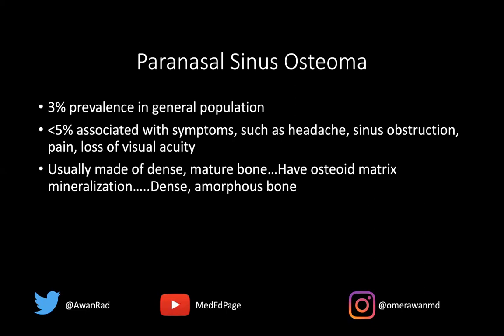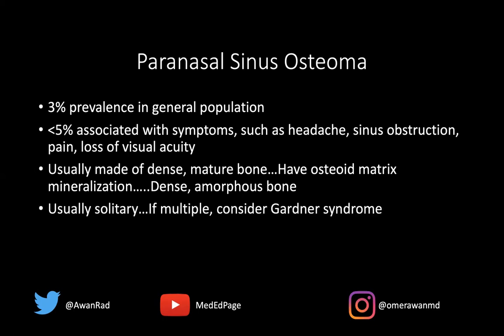This is usually made of dense, mature bone because there's osteoid matrix mineralization. Matrix is the substance that the tumor is forming — in this case, bone. So there's osteoid matrix, and mineralization means the calcification associated with that matrix. Because this is bone, we have really dense, amorphous material in the form of bone forming in an osteoma.